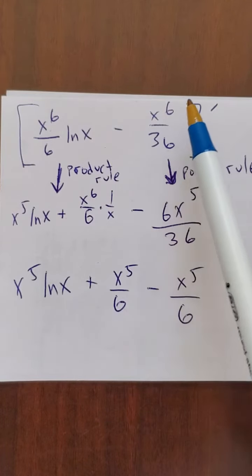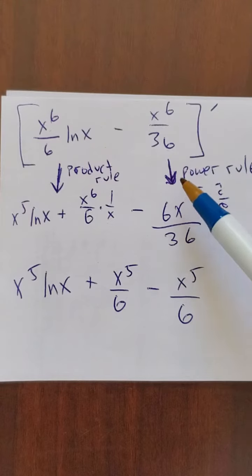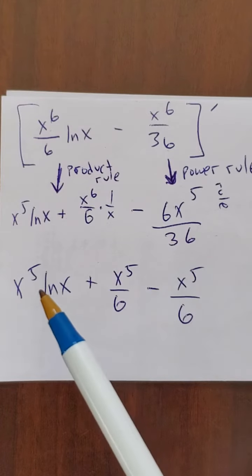And here, for this guy, I just use a straightforward power rule. And x to the 6th over 36, that's 6x to the 5th over 36.